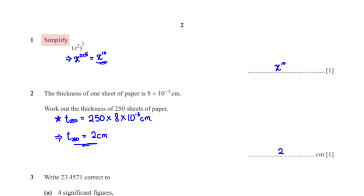Simplify x raised to the power 2, raised to the power 5. By applying one of the rules of indices, we multiply the powers, and so we get x raised to the power 2 times 5, which leaves us with x raised to the power 10.